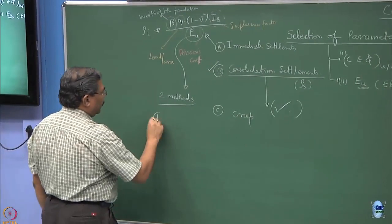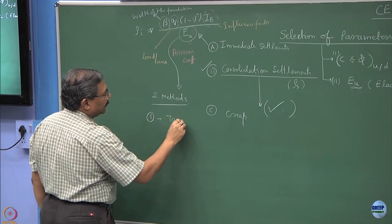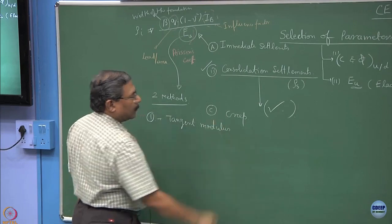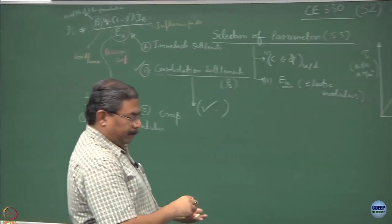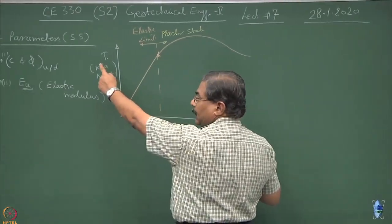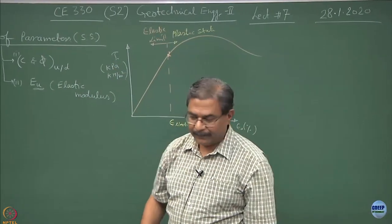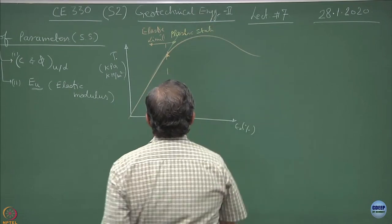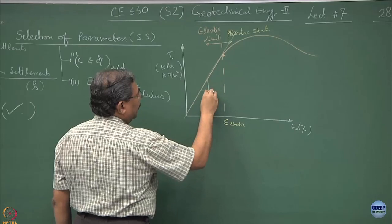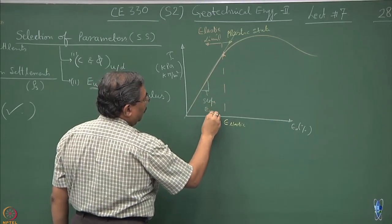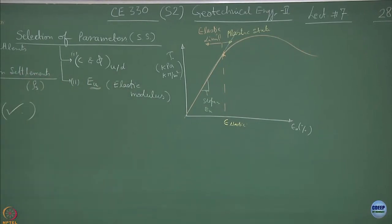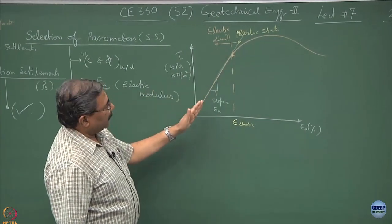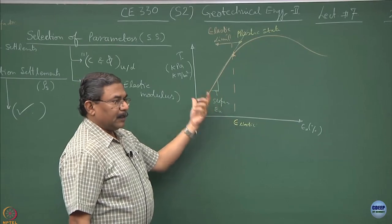One of the methods is what we call as tangent modulus. On this graph, having obtained tau versus epsilon_a relationship, if I draw a tangent to the linear portion, the slope of this line is Eu. That is why the name is tangent modulus. Draw the tangent to the initial portion; the slope of this line is tangent modulus Eu.